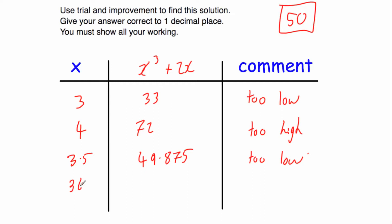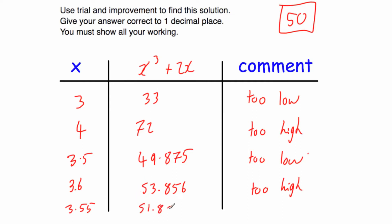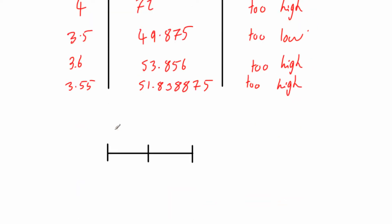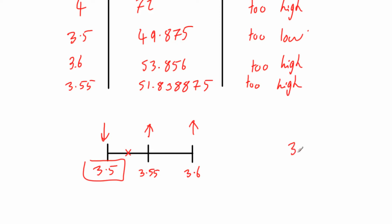Let's try 3.6: 3.6 cubed plus 2 times 3.6 equals 53.856 — too high. Let's try the checker 3.55: that gives 51.838875, which is also too high. So 3.5 is too low, 3.6 is too high, and the checker 3.55 is too high. Our answer is between 3.5 and 3.55, so it's closer to 3.5 than to 3.6. The answer is 3.5 to one decimal place.